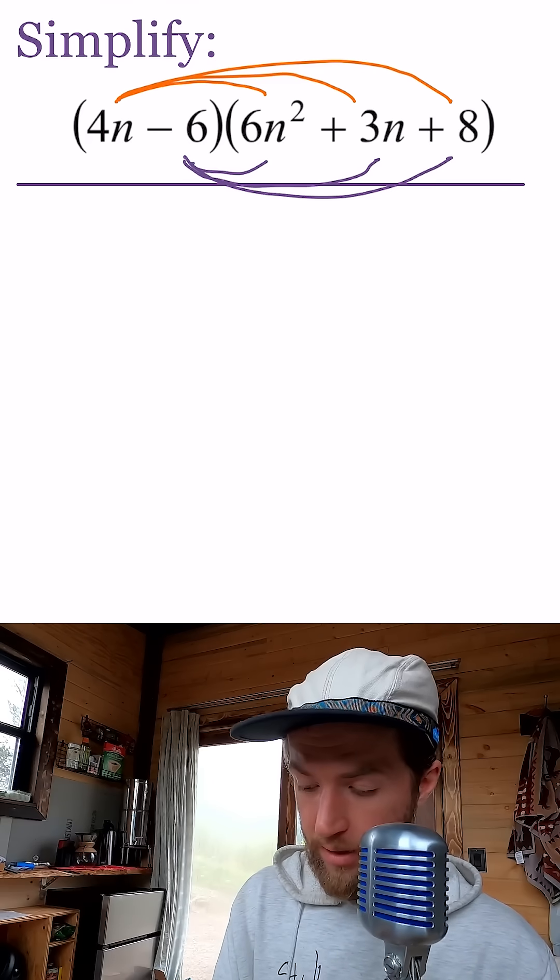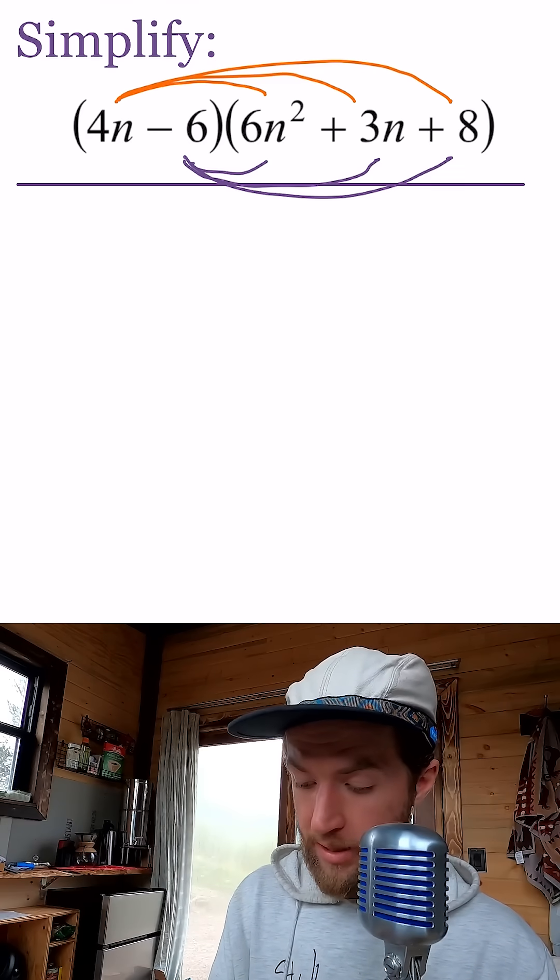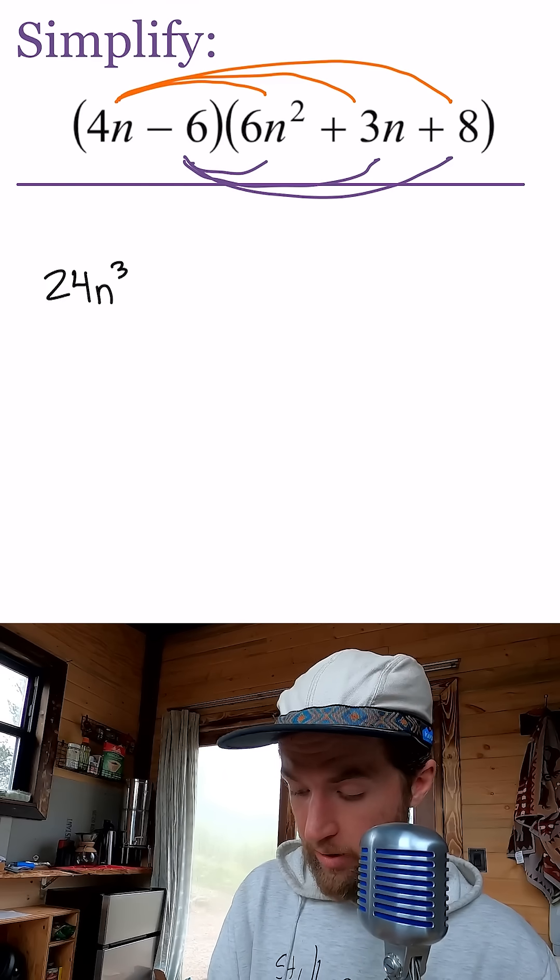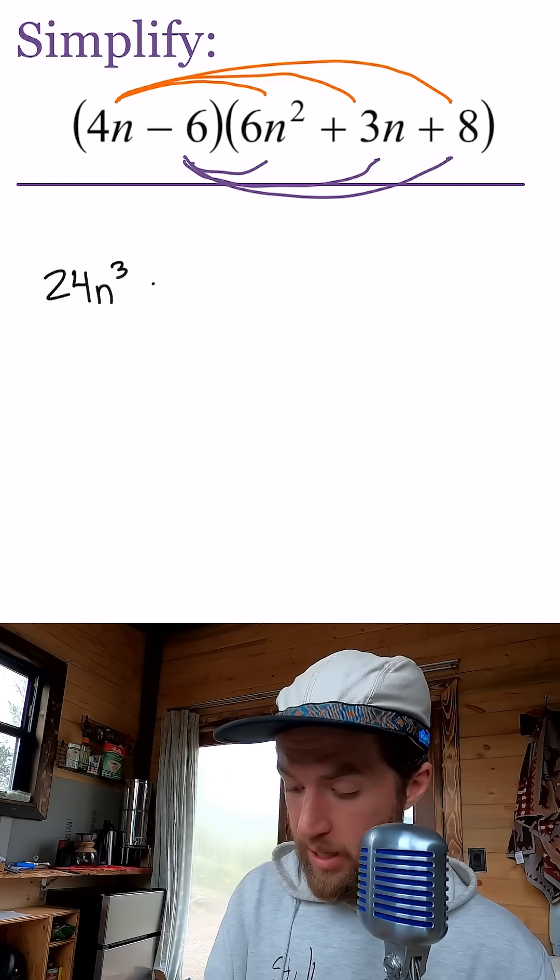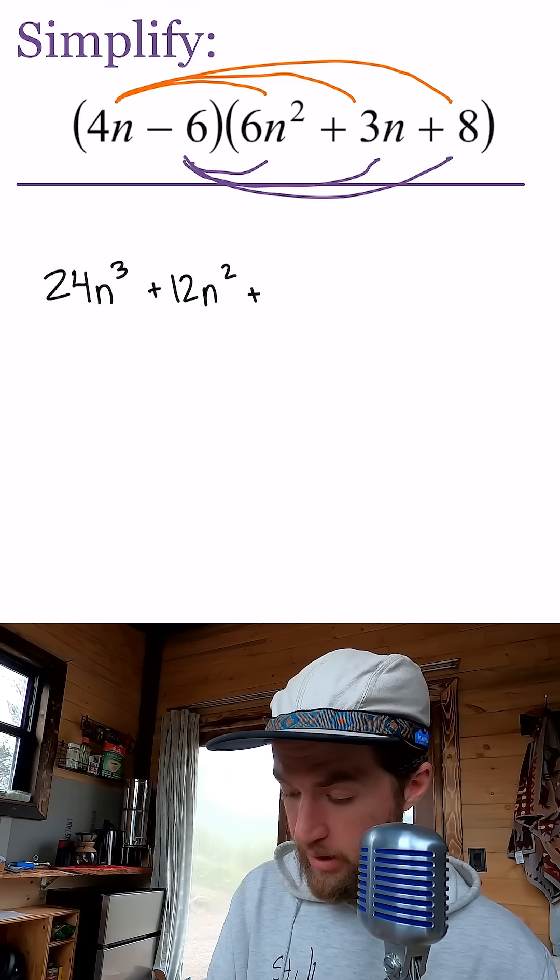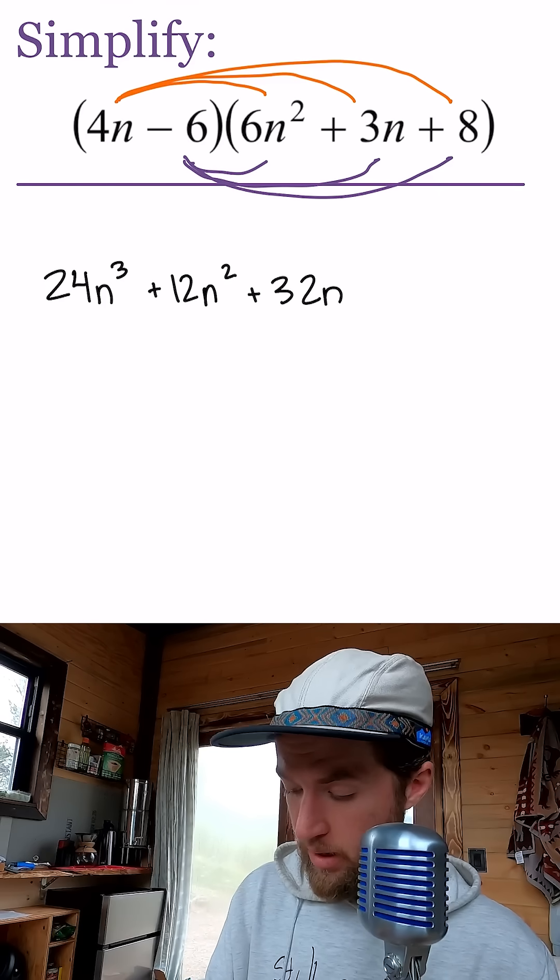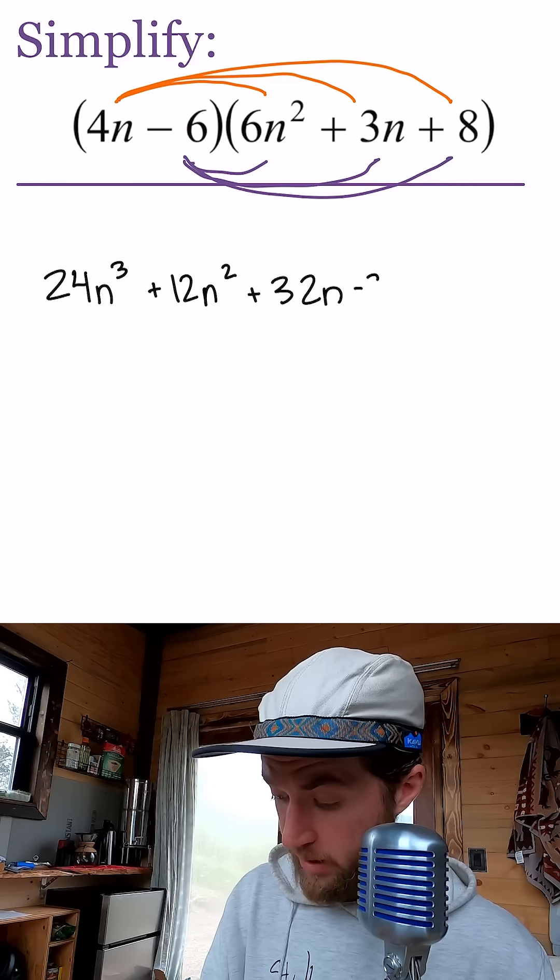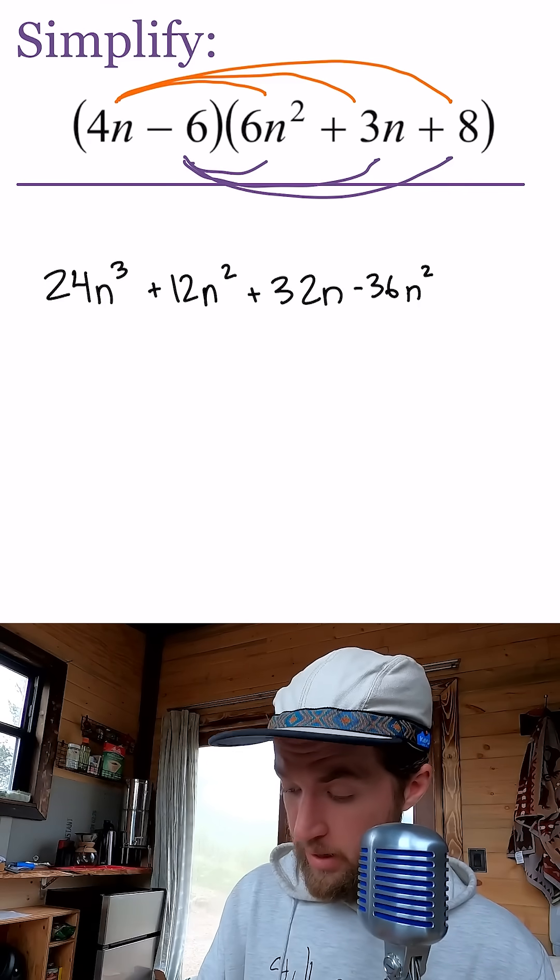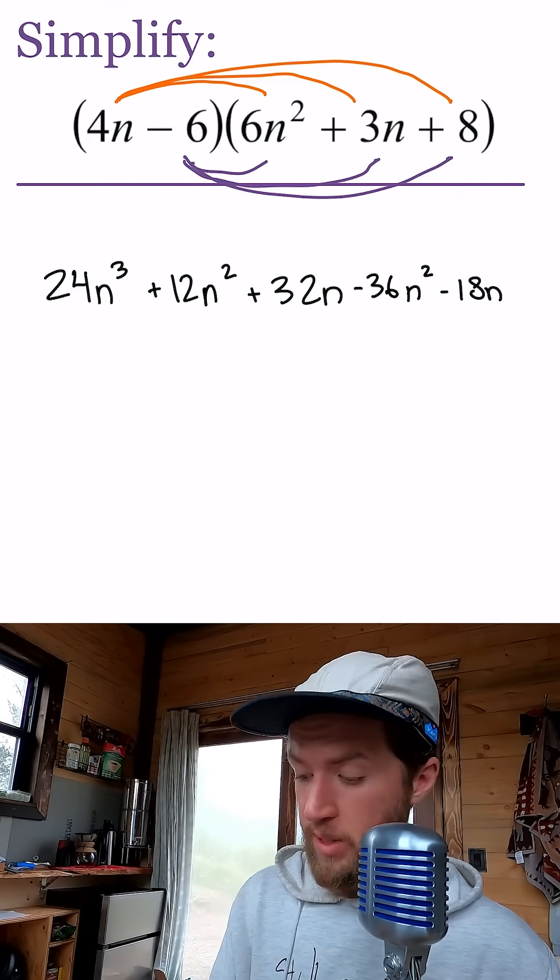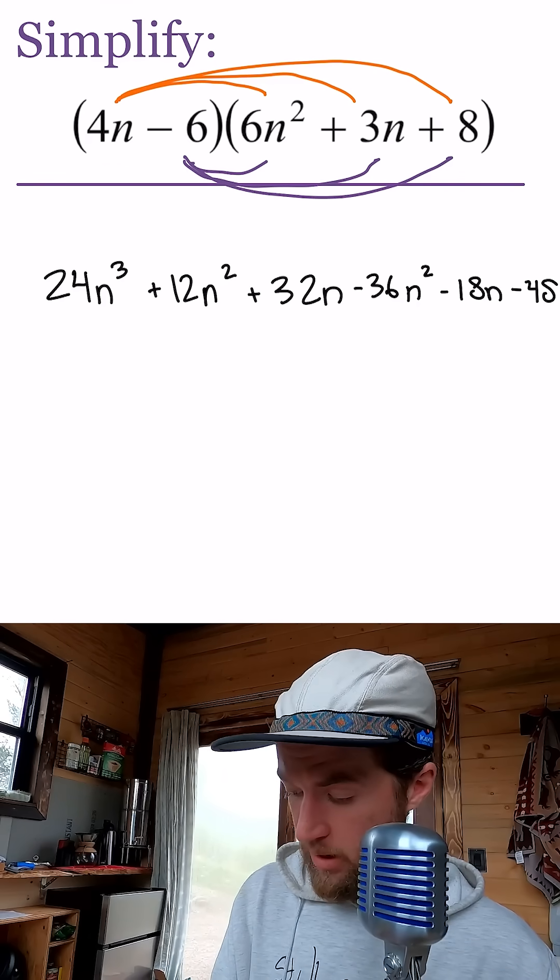So 4n times 6n² is 24n³. 4n times 3n is 12n², and 4n times 8 is 32n. Now for the next: negative 6 times 6n² is negative 36n², negative 6 times 3n is negative 18n, and negative 6 times 8 is negative 48.